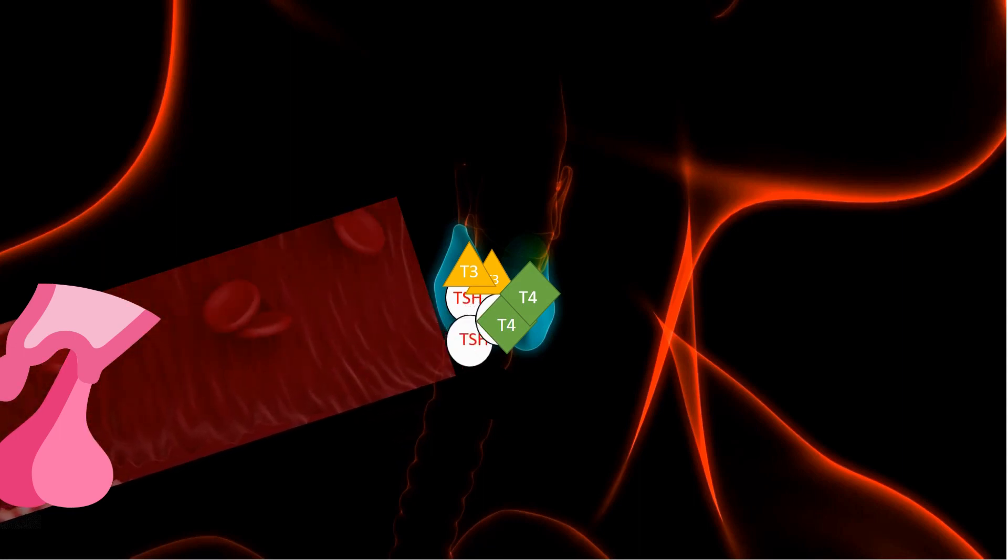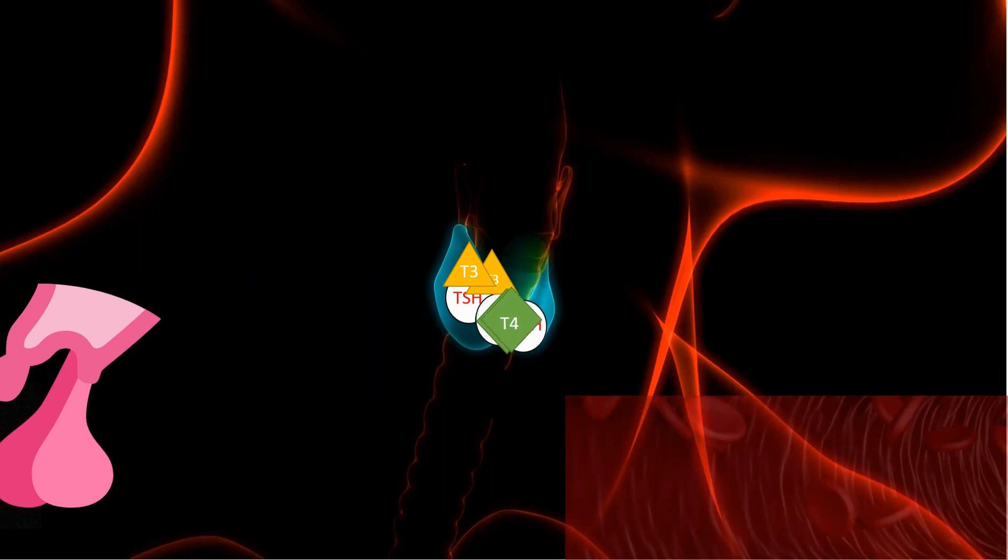TSH levels are high in hypothyroidism because the body is trying to stimulate the thyroid gland to produce more thyroid hormones, T3 and T4.